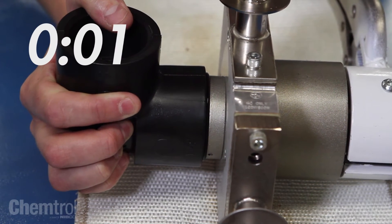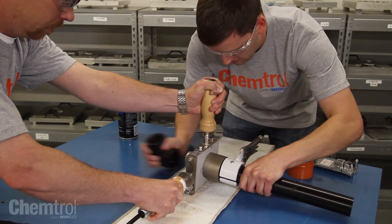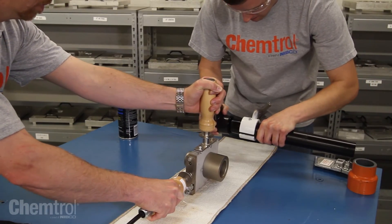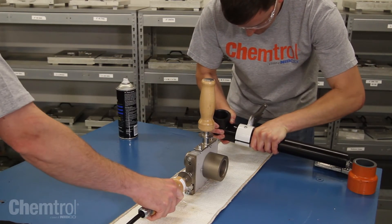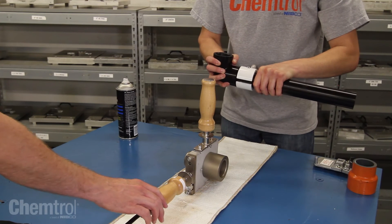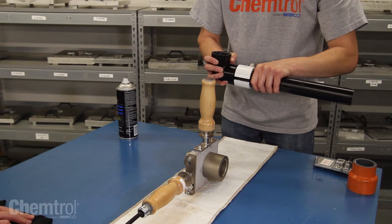When the timer beeps, simultaneously remove the pipe and fitting and immediately insert the pipe squarely and fully into the socket without purposeful rotation. Hold steady for 30 seconds, allowing the fusion joint to set up.